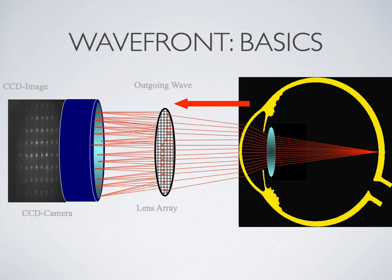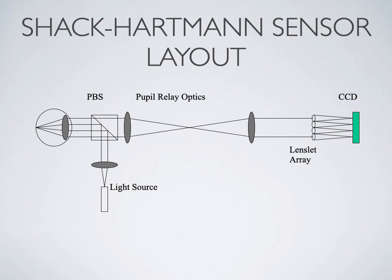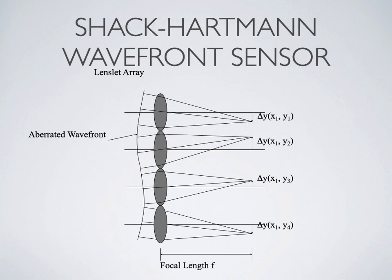We can quantify things with a Shack-Hartmann aberrometer. Rays of light emerge from the patient's eye and pass through a grid. The spacing of the dots produced by the grid gives us information about the shape of the wavefront. The grid has little lenslets that focus onto a CCD chip, which looks for the locations of the dots. With an aberrated wavefront, the dots will be all askew.